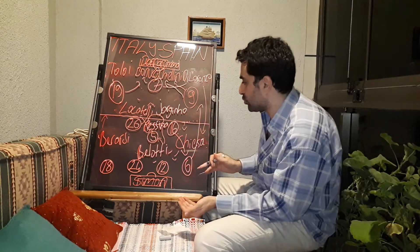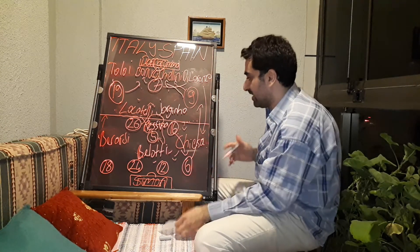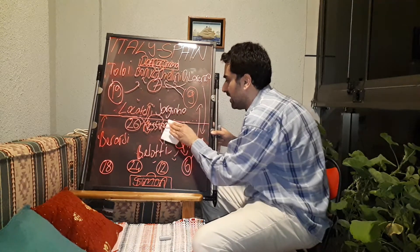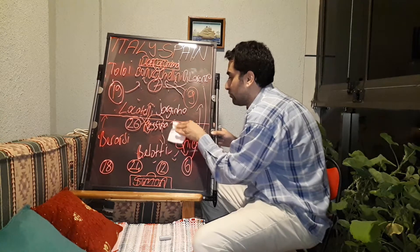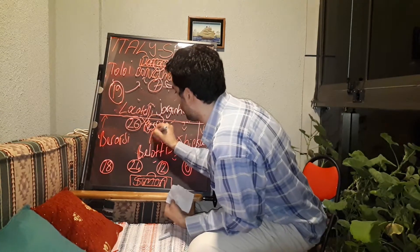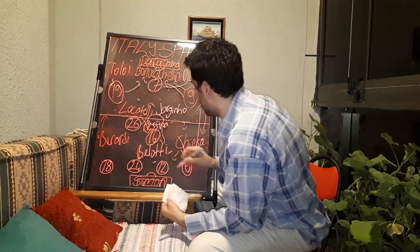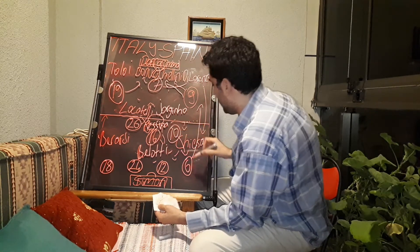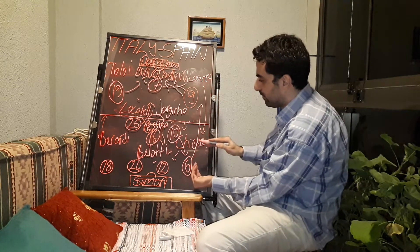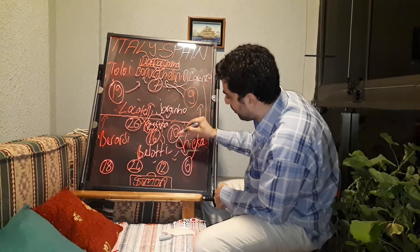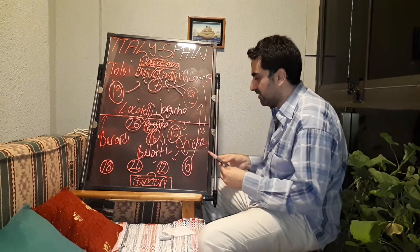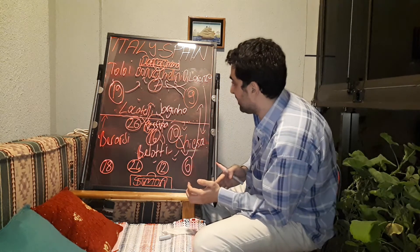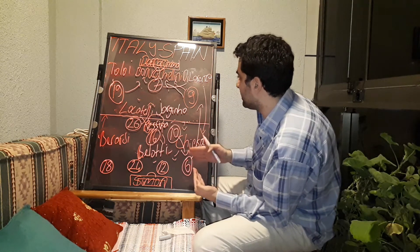In extra time there were more substitutions for both teams. Sergio Busquets came off and Thiago Alcantara replaced him. After this substitution, Pedri and Rodri covered the Busquets role. Thiago Alcantara played close to the right, and again Llorente played more offensively. Alcantara dropped back to cover Llorente's position in Spain's attacks.